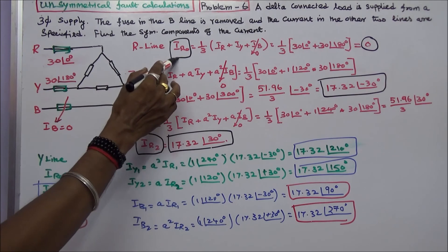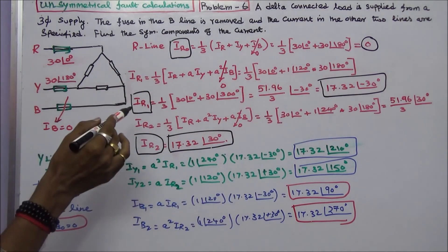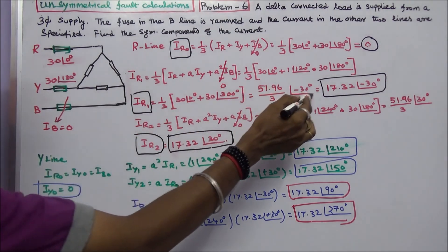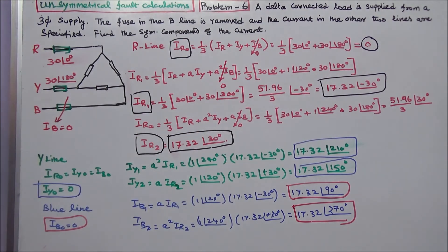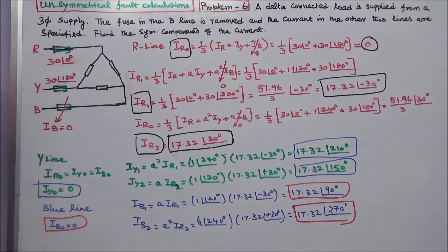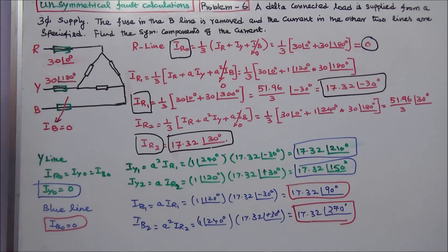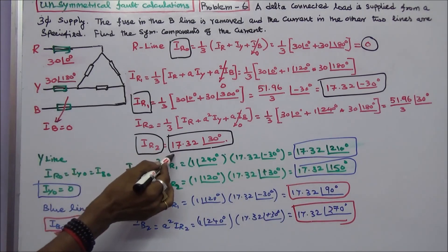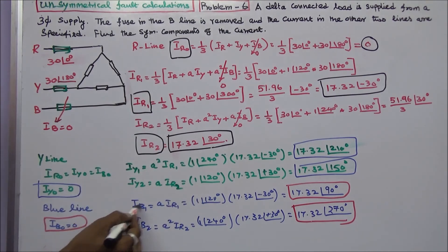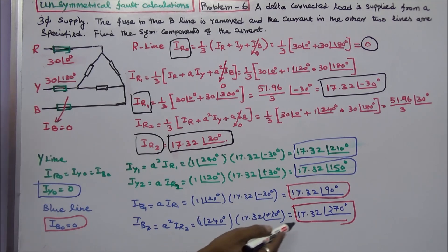Summary of results: IR0, IY0, IB0 are all equal to 0. IR1 equals 17.32 angle minus 30 degrees. IY1 equals 17.32 angle 210 degrees. IR2 equals 17.32 angle 30 degrees. IY2 equals 17.32 angle 150 degrees. IB1 equals 17.32 angle 90 degrees. IB2 equals 17.32 angle 270 degrees. This is how we work out this problem. Thanks for listening.